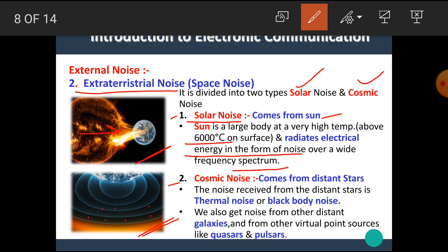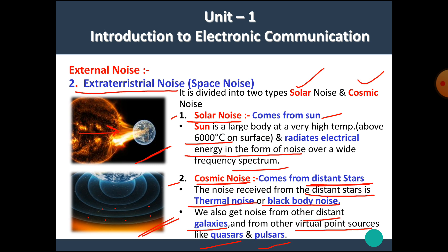The next type is cosmic noise, which comes from distant stars. The noise received from distant stars is called thermal noise, black body noise, or cosmic noise. We also get noise from other distant galaxies and from virtual point sources like quasars, pulsars, etc. We also get this type of noise from the center of our galaxy.